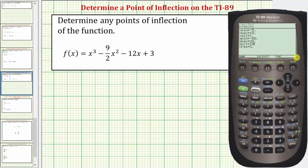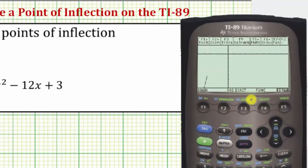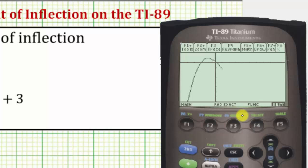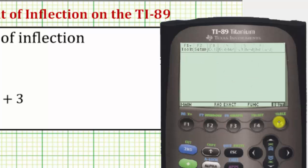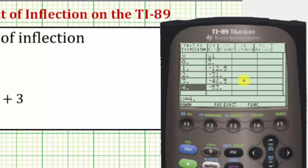Let's graph the function again by pressing diamond F3 for graph. Notice now we have a much better view of the function. Another way that can help adjust the window would be to use the table of values by pressing diamond F5. With the table set on automatic and the change of x by ones, we can scroll through and look at the y values for different values of x to help determine how to adjust the window.